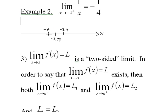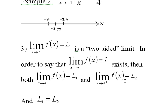Now we talk about the two-sided limit. The limit of f of x as x approaches a equals L — notice there's no little plus or minus here — is a two-sided limit. In order to say that this two-sided limit exists, the limit from the left side must exist, the limit from the right side must exist, and these two limits must be equal.